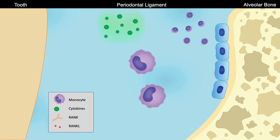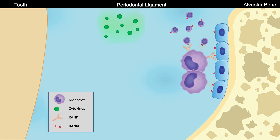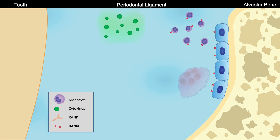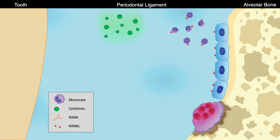The most important cells are the osteoclast precursor cells or monocytes. These cells have a receptor at their surface called RANK. Local cells, such as osteoblasts, have a protein at their surface called RANK ligand. Because of the interaction between this RANK ligand on local cells and RANK receptors on osteoclast precursor cells, the cells start to interact with each other and they form osteoclasts. Osteoclasts are the bone-resorbing cells that, by resorbing the bone, resolve the trauma caused by orthodontic forces.